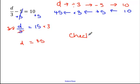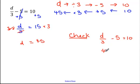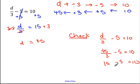Let's do a quick check. d divided by 3 minus 5 is equal to 10. d we got was 45, so substitute that in. 45 divided by 3 is 15, minus 5. 15 minus 5 is definitely 10, and 10 is equal to 10.